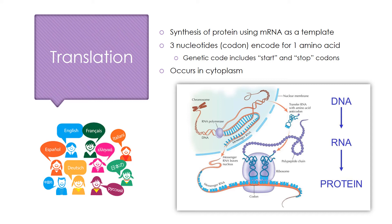Back to the translation process. This occurs in the cytoplasm. After mRNA is made during transcription in the nucleus, it swims out to the cytoplasm where translation takes place. Translation utilizes codons and anticodons — three nucleotides which form a unit and code for a specific amino acid. The genetic code includes start and stop codons, which signal when to start and stop synthesizing the amino acid chain. The end result of translation is a polypeptide chain or a protein.